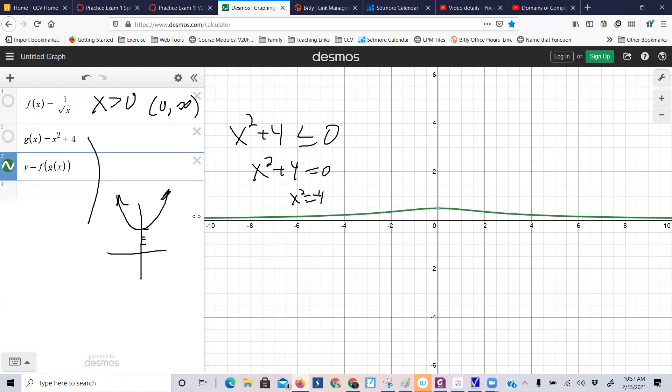and even though the original function had a limitation, the composite function wipes that out, so in that sense, it's kind of cool that it does that. Does that always happen?